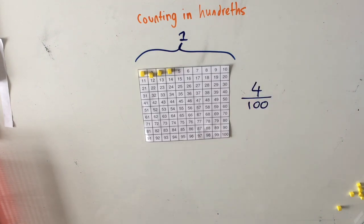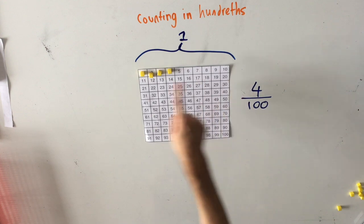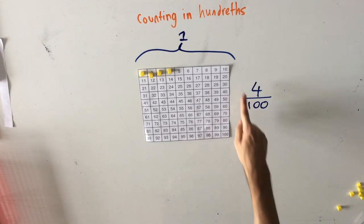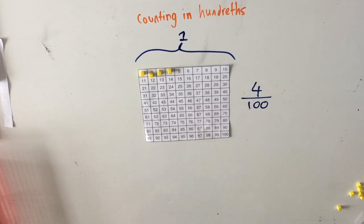We need to remember when we write this down that the top number tells us how many is covered up and the amount that we're showing, and the bottom number shows us how many different pieces there are. Four out of one hundred pieces are being shown, so I'm showing you four one hundredths.